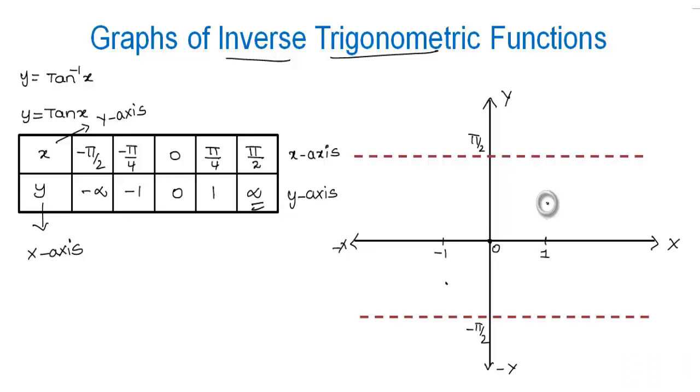By joining all these points we get a curve, and this curve is the graph of the inverse trigonometric function y = tan^(-1)(x).